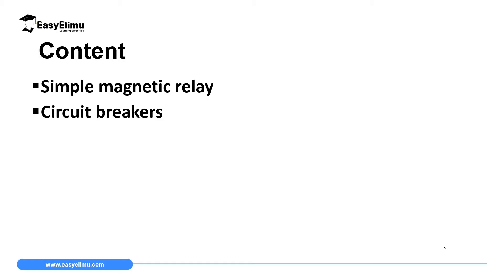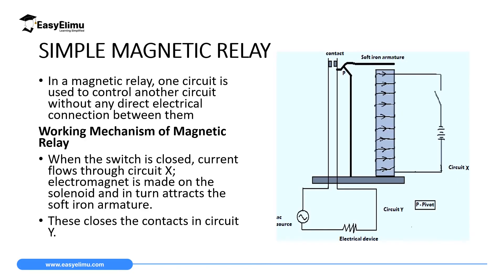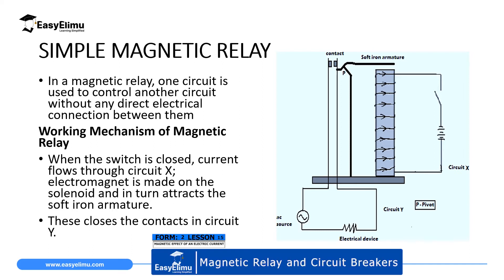Later we are going to draw a well-labeled diagram of a circuit breaker, then describe how a circuit breaker helps us to cut current when there is excess current in the circuit. A simple magnetic relay is a set of circuits in which one circuit is used to control another circuit without any direct electrical connection between them.